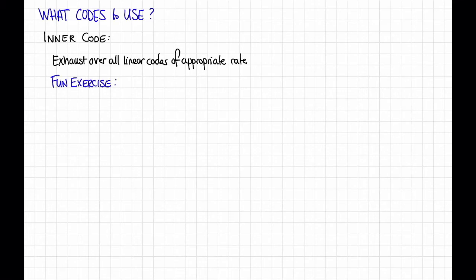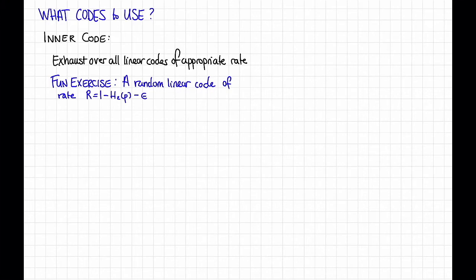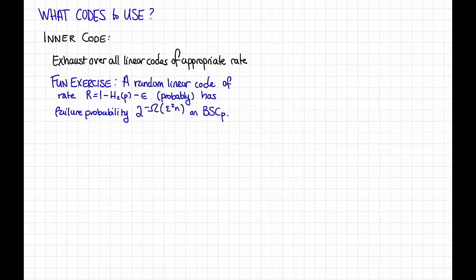More precisely, show that a random linear code of rate 1 minus the binary entropy of P minus epsilon is very likely to have tiny failure probability on the BSC — in particular, failure probability something like 2 to the minus big omega of epsilon squared n. Notice that our use of probability is a little subtle: we choose a random linear code and fix it, and show that with high probability over that random code, with high probability over the BSC, that code succeeds.